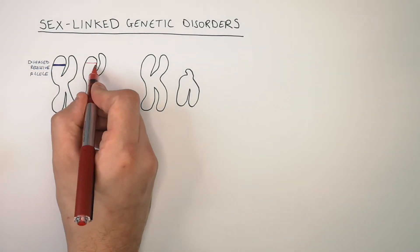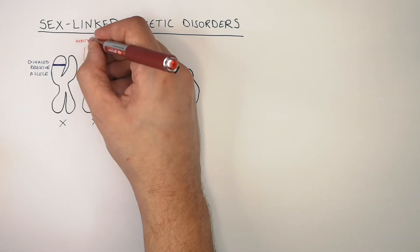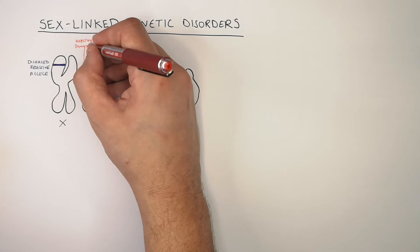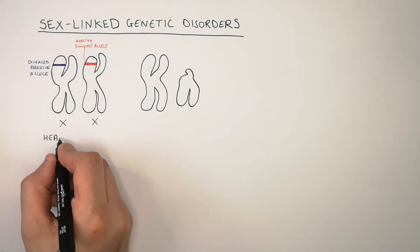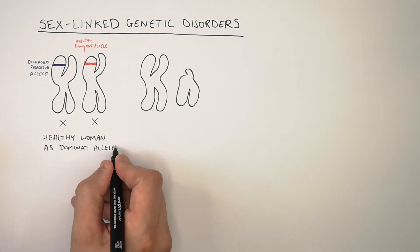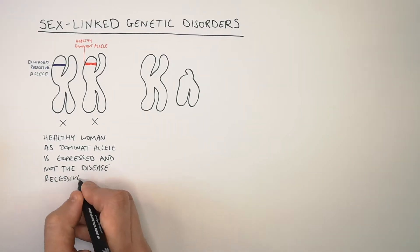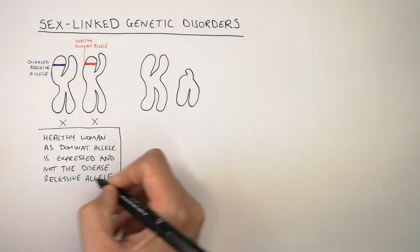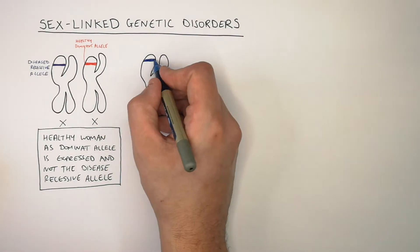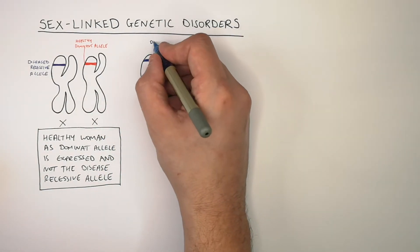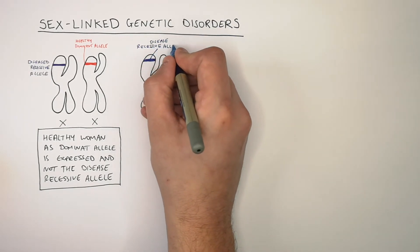On her other X chromosome, she is carrying the healthy dominant allele. So this woman is going to be healthy because the dominant allele is expressed and not the recessive disease allele. If we now look at the man, his X chromosome is also carrying the diseased recessive allele.